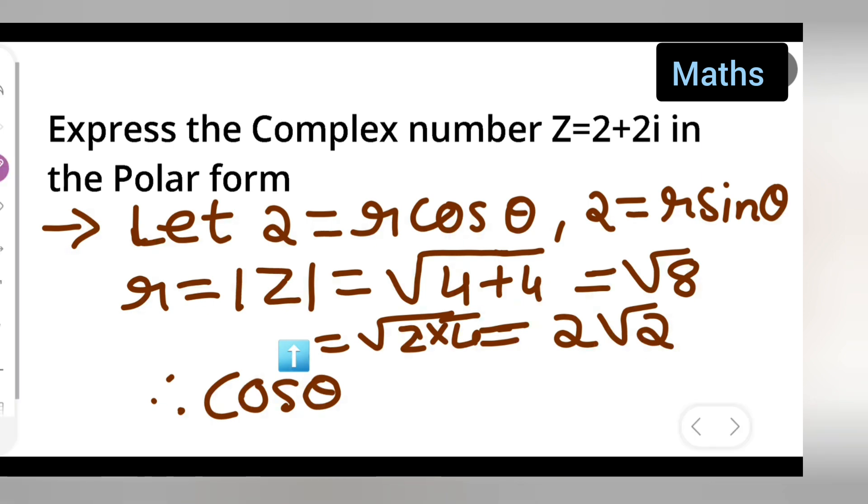So now therefore you can say that cos theta, cos theta is equal to 2 by r. So what is 2 and what is r? This will be 2 and r value is 2 into root 2.